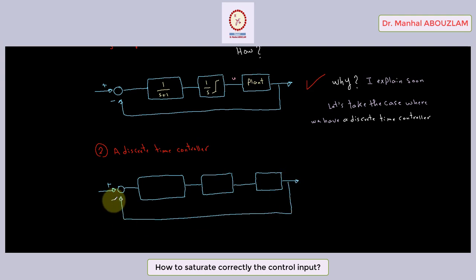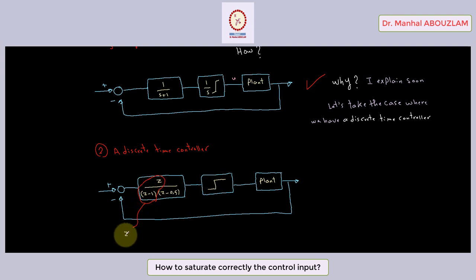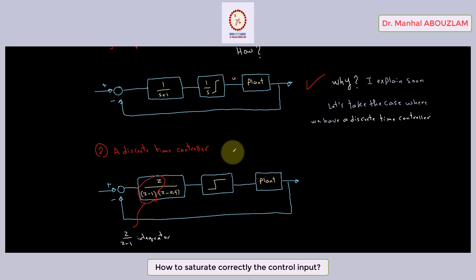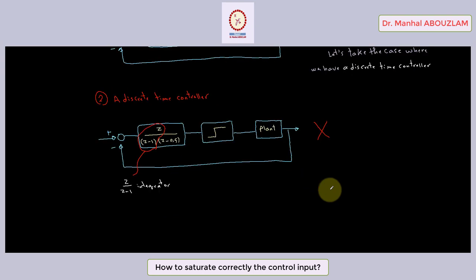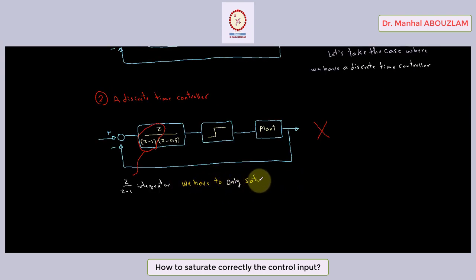Let's take this closed loop. Suppose we have this controller and we put here this saturation block. As you observe, we have here an integrator. So we don't have to put the saturation block here — if we do, this closed loop is not correct. As before, we have to only saturate the integrator as we did in the continuous-time case.